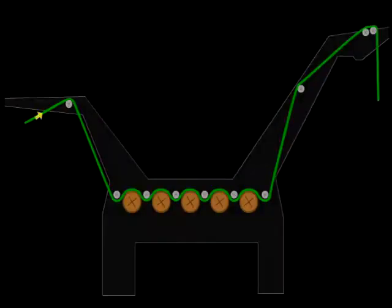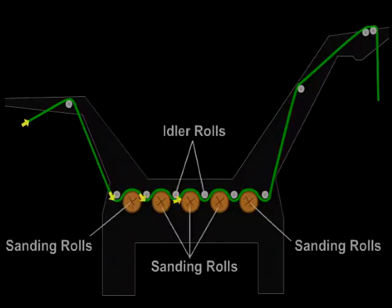How do sanders work? Fabric, open to its full width, is put in contact with one or more abrasive rolls that move at a much higher surface speed than the fabric. There are basically two types. The sanding action associated...